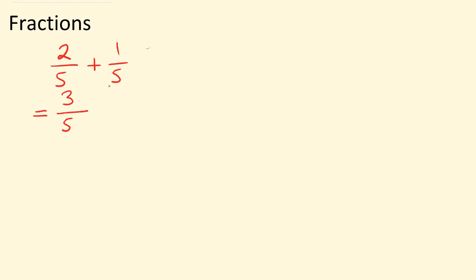So the answer is three fifths. Subtracting with simple fractions is not much different. Say for example, we have four fifths and we are taking away two fifths. Again, do not touch the denominators — leave them as they are — and four take away two is two. So the answer is two fifths.